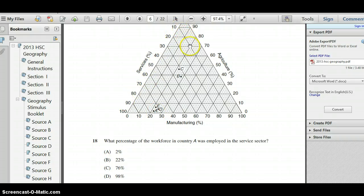the lines running on this axis run diagonally. This is 20 down here, this is 30 down here, this is 40 down here, 50, 60, 70. So our number is somewhere between 70 and 80. What percentage of the workforce in country A was employed in the service sector? 2%, it's not possible, it would have to be up here somewhere. 22% would have to be down here. 76%, looking very likely, and the last one is 98%, it would have to be right down here. Clearly, the answer in this instance is C, because 76 runs down here.